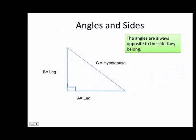Before I start, I want to make sure that you understand the relationship between angles and sides. Remember, a right triangle will always have two legs and one hypotenuse. The angles are always opposite to the sides they belong to. That means this side belongs to this angle — it's opposite to the side. This angle here is opposite to side B. That is why the hypotenuse is always opposite the 90-degree angle.